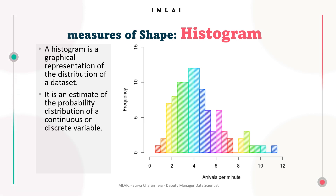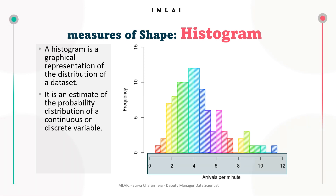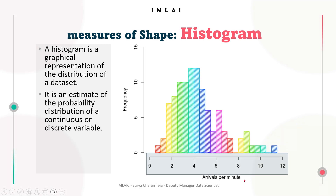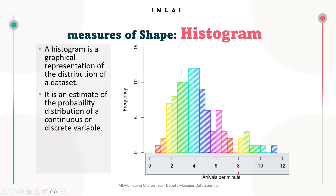Let's look at each component of a histogram. First, bins — bins are intervals or ranges that divide data into groups. These bins are represented on the x-axis and are typically of equal width. The choice of bin width can affect the appearance of the histogram.